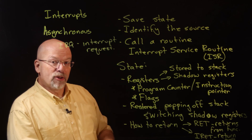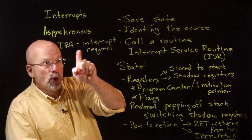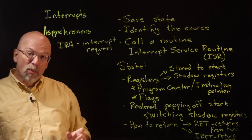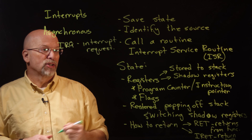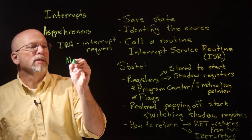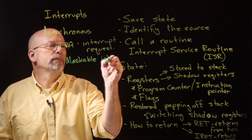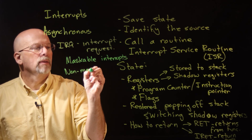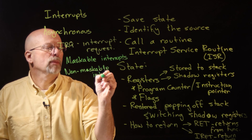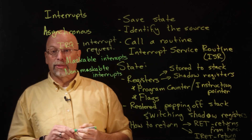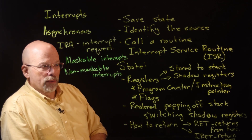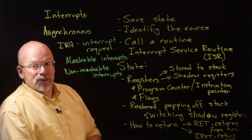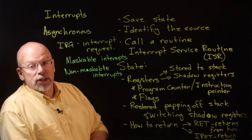Because we know who is interrupting us, we can choose to ignore them — and that gives us the topic of maskable interrupts. Think about the phone call again: if caller ID came up as an unknown number, you could mask that. You could say, 'I don't want to answer that,' and completely ignore it. There are some interrupts that you're going to ignore in the same way.